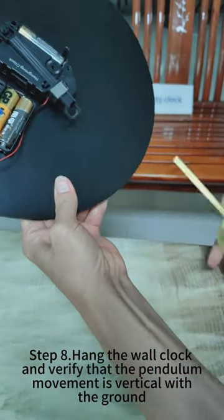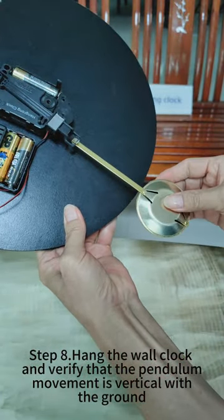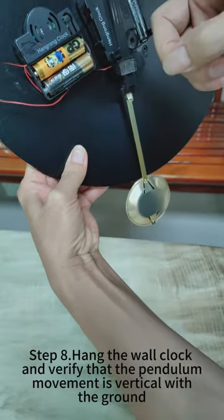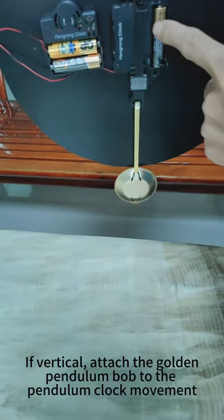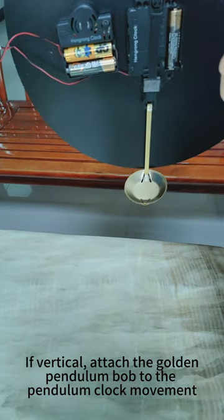Step 8. Hang the wall clock and verify that the pendulum movement is vertical with the ground. If vertical, attach the golden pendulum bob to the pendulum clock movement.